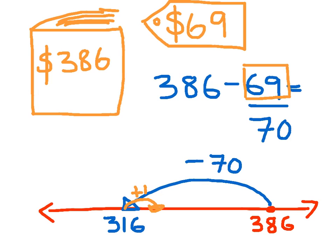So my answer will be 317. So the answer to my question, what is 386 take away 69 is 317.